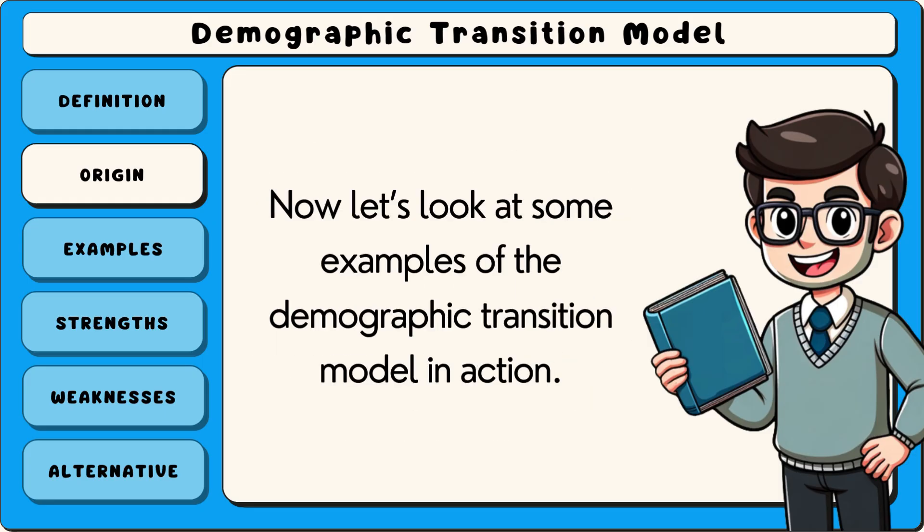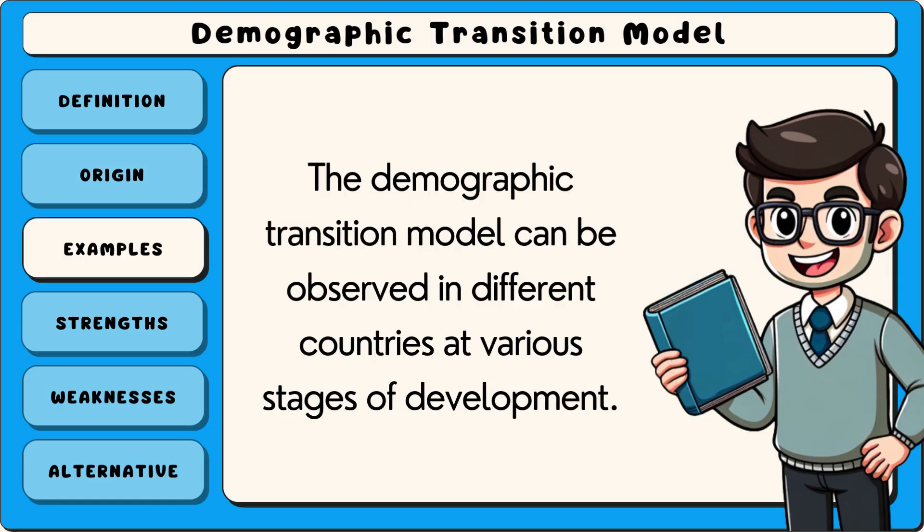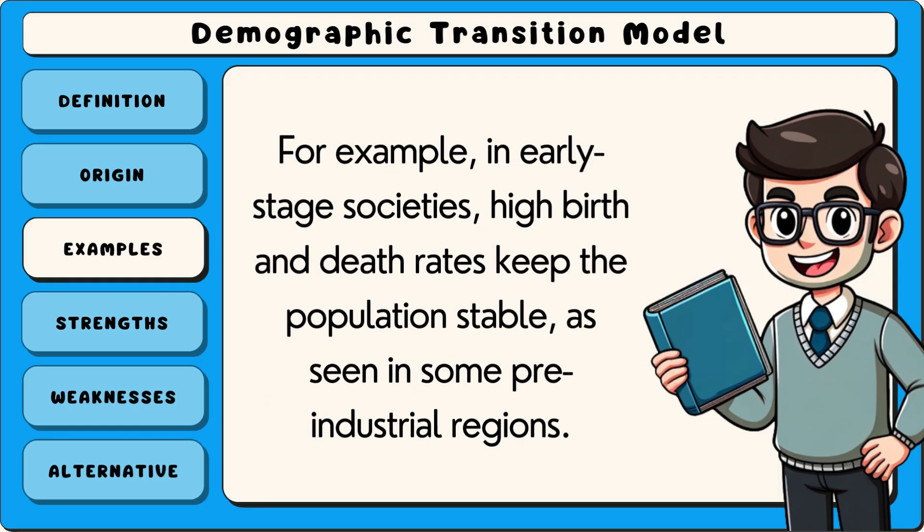The demographic transition model can be observed in different countries at various stages of development. For example, in early stage societies, high birth and death rates keep the population stable, as seen in some pre-industrial regions.